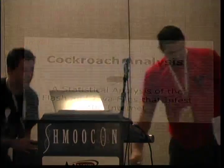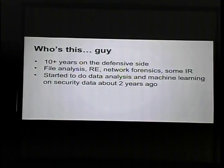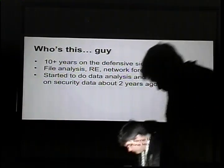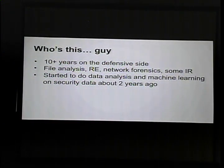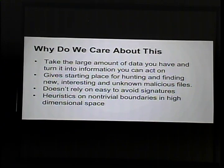I'm David Dorsey, currently at Click Security in Austin. I've been on the defensive side for a while now, working on various things over the years, and I started doing data analysis and machine learning a couple of years ago. What I'm here to talk about is how you take a large amount of data and turn it into information you can act on — giving you starting places to hunt and find new, interesting, and hopefully unknown malicious files. It doesn't rely on easy-to-avoid signatures; it's essentially heuristics on non-trivial boundaries in high-dimensional space, looking at up to 90 different attributes.